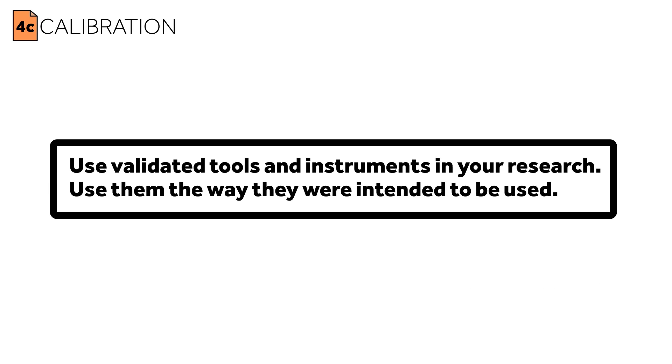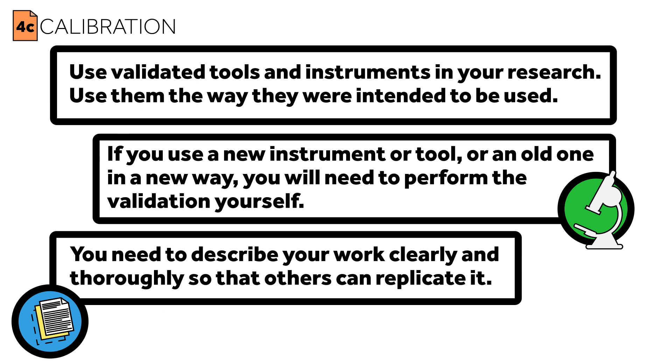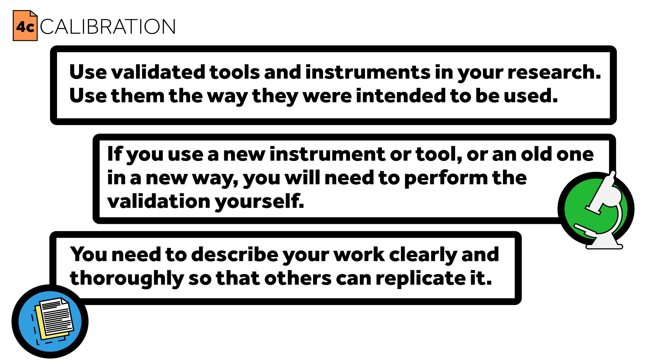Let's review. Use validated tools and instruments in your research, and use them in the way they were intended to be used. If you use a new instrument or tool, or an old one in a new way, you will need to perform the validation yourself. This is a critical step and you need to describe your work clearly and thoroughly so that others can replicate it. Before and throughout experiments, you need to calibrate your instruments — make sure again and again that they are performing accurately and precisely. More than one experiment has been found to be incorrect because the instruments making the measurements were off.